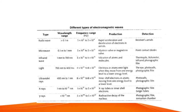Gamma rays have wavelengths less than 10⁻³ nanometers and frequencies from 5 × 10¹⁸ Hz to 5 × 10²² Hz. They are produced in the radioactive decay of the nucleus and are detected by photographic films and ionization chambers. The table also includes how each wave type is produced and detected, in addition to their wavelength and frequency.